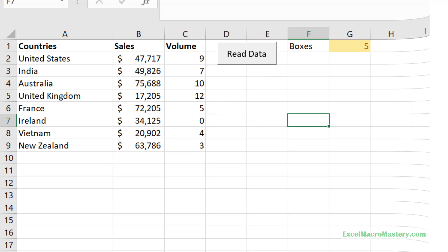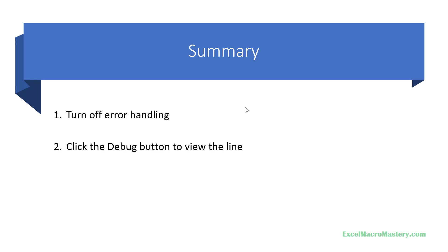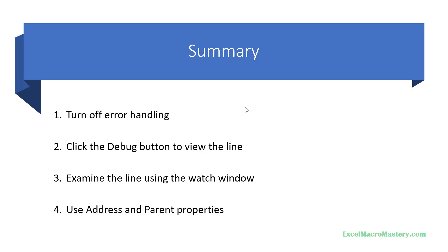In this video we looked at how to locate and solve a VBA error in under a minute. Here are the steps: number one, if your code uses error handling, turn it off in the Visual Basic Editor by setting 'Break on All Errors'. Number two, run the code and when the error dialog appears click the debug button to stop on the line with the error. Number three, examine the line using the Watch Window until you find the part with the error. If the error is related to a range, use the .address and .parent properties to find the range, worksheet, and workbook.